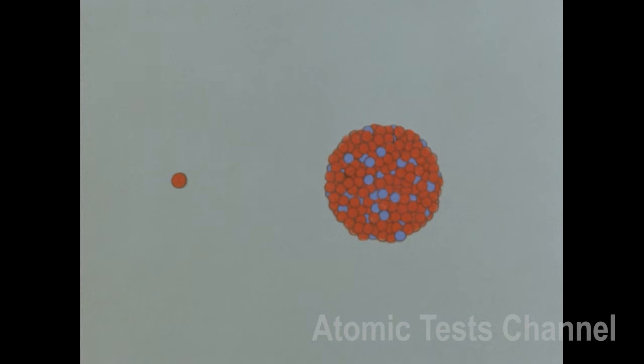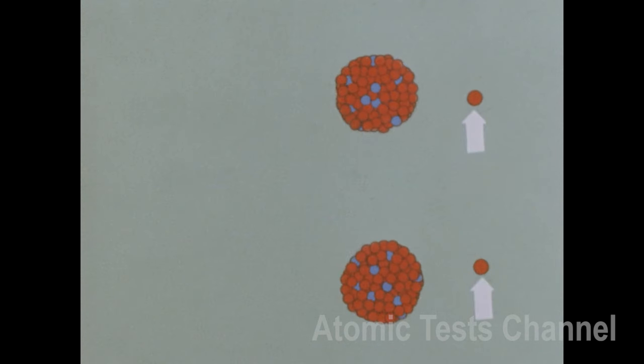The phenomenon of atomic fission makes it possible to produce an atomic chain reaction. This occurs when neutrons released from one fissioned atomic nucleus collide with other nuclei.